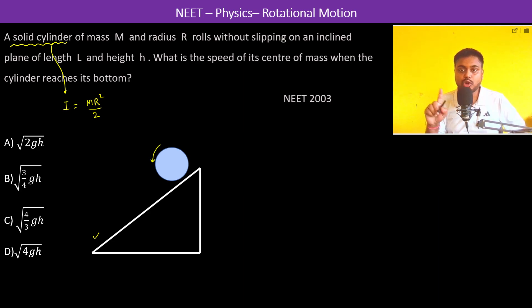And also there is no loss of energy by friction because the velocity at this point is going to be 0 and friction is acting here. Therefore, the power delivered by friction is equal to frictional force dot V which is equal to 0 because V is equal to 0.